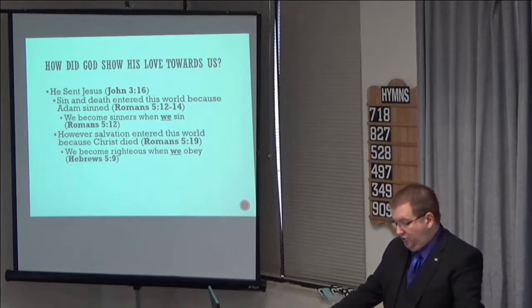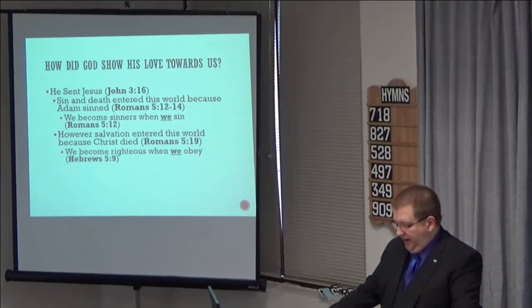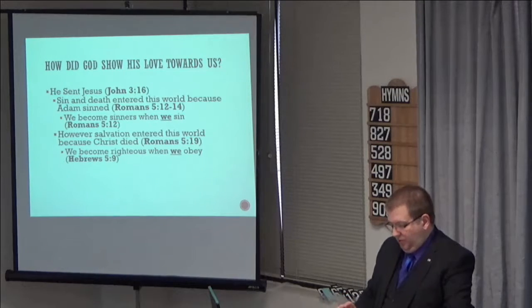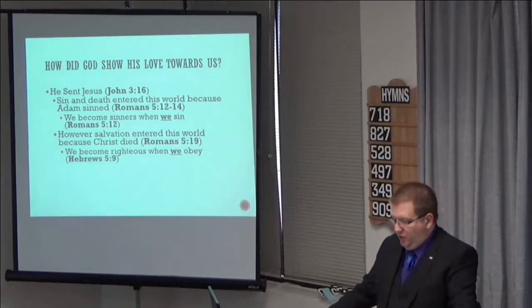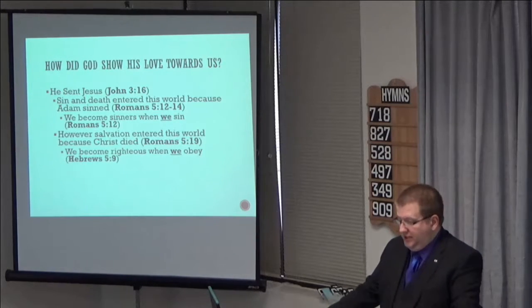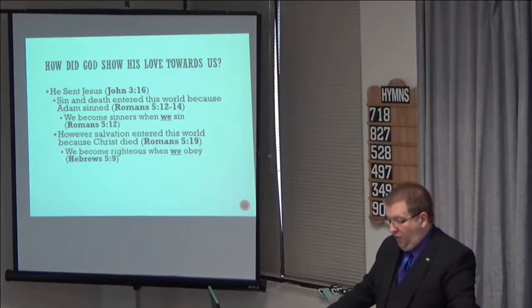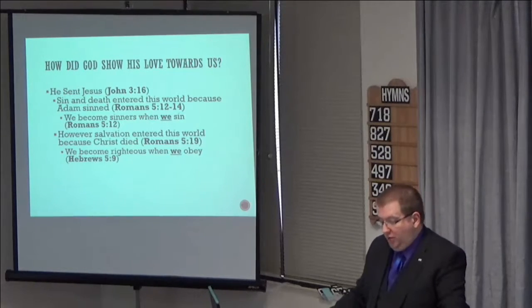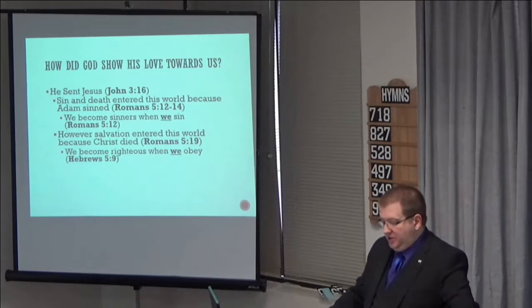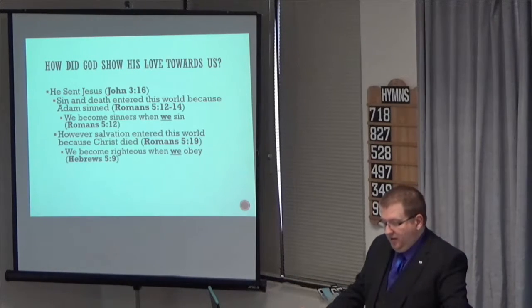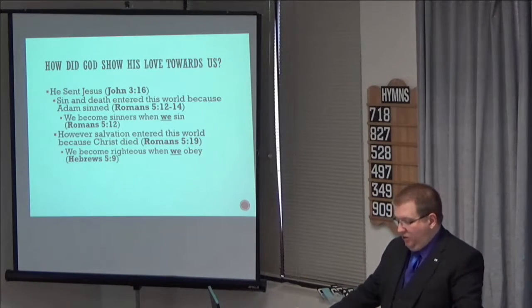Having now dealt with the destructive nature of sin, let's turn now to God's outpouring of love that he had for us. Let's read Romans 5, verses 6 through 11. For while we were still weak, at the right time, Christ died for the ungodly. For one will scarcely die for a righteous person, though perhaps for a good person one would dare even to die. But God shows his love for us in that while we were still sinners, Christ died for us. Since therefore we have now been justified by his blood, much more shall we be saved by him from the wrath of God. For if while we were enemies we were reconciled to God by the death of his Son, much more now that we are reconciled shall we be saved by his life. More than that, we also rejoice in God through our Lord Jesus Christ, through whom we have now received reconciliation.